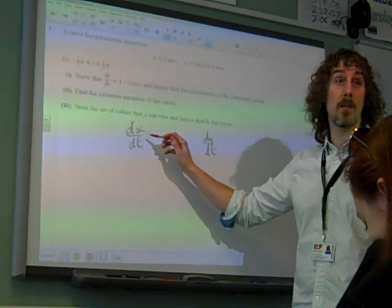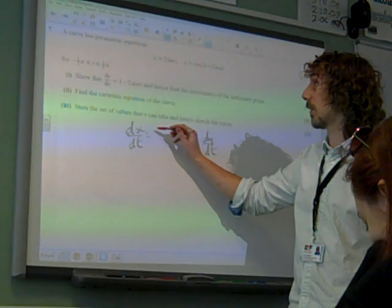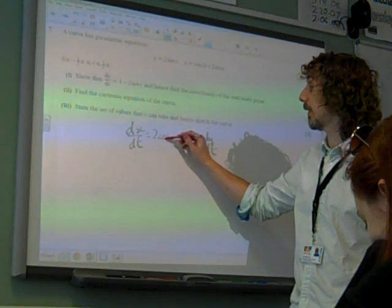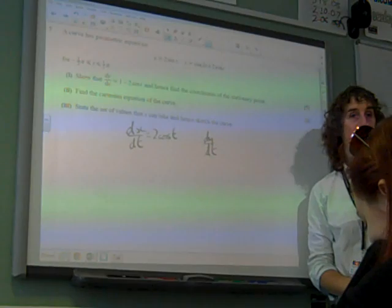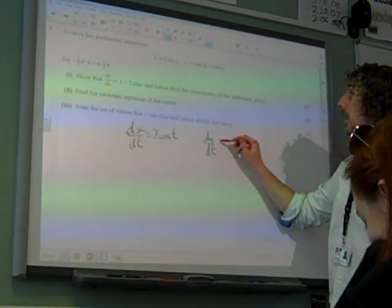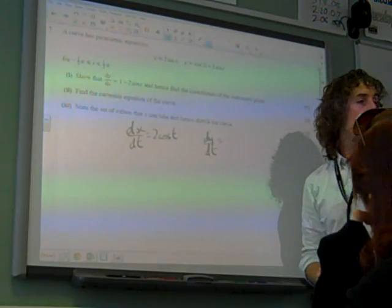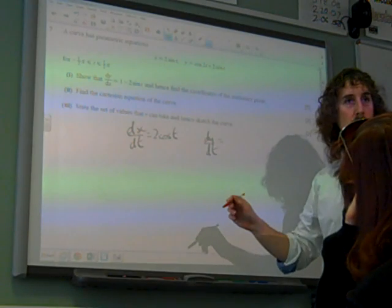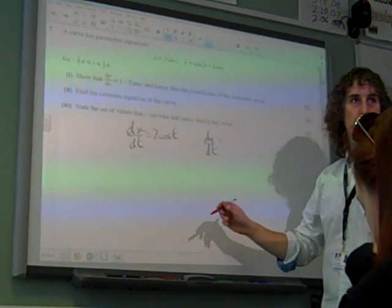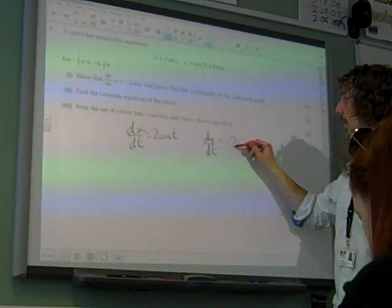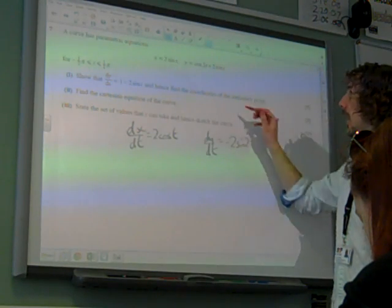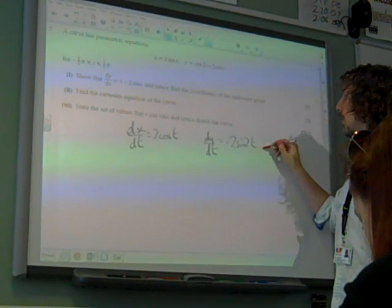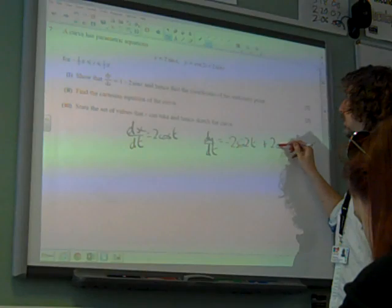You didn't get a mark for dx/dt, you just should have known that was 2cos(t). And dy/dt, because that 2 is in there, if we differentiate cos(2t), it goes to minus 2sin(2t). Because cos differentiates to minus 2sin(2t), and 2sin(t) goes to 2cos(t).